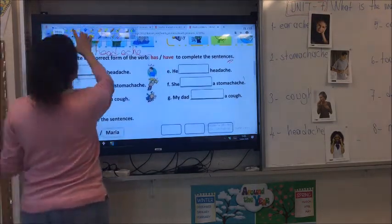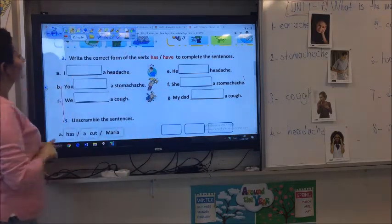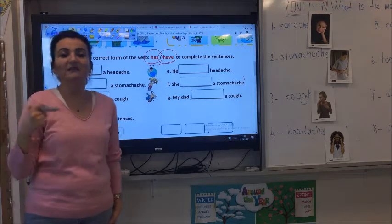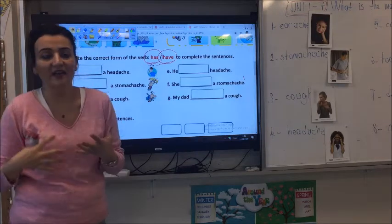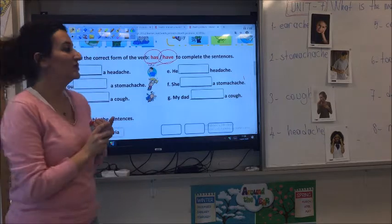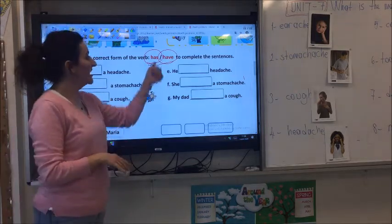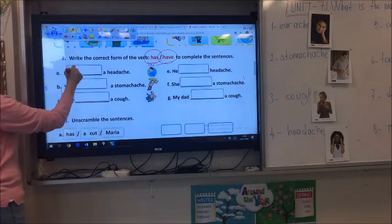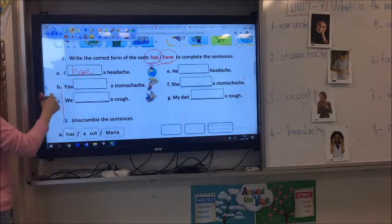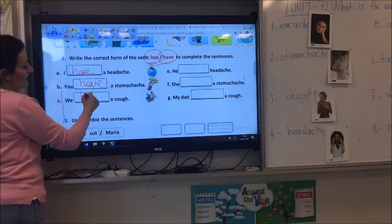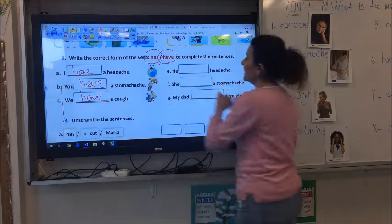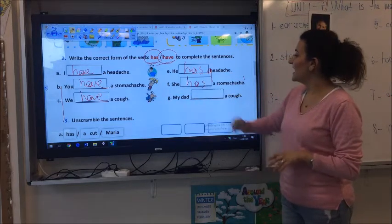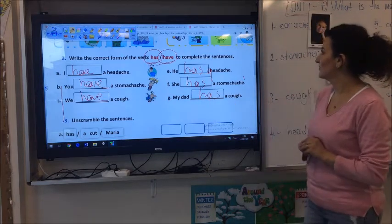Evet çocuklar burası işte benim için önemli olan yer. Buraya beraber yapalım. Write the correct form of the word. Has or have. Complete the sentences. Hastalıkları söylerken ne diyoruz? I have got. I have a headache. Or she has a headache. Has ve have kullanıyorduk. Biz ne zaman have kullanıyorduk? I, you, we, they'de. Has'i ne zaman kullanıyorduk? She, he, it yazarken has kullanıyorduk. Hadi bakalım ona göre yapalım. I have. You have, we have a cough. We have a stomachache. He has a headache. She has a stomachache. My dad has a cough.